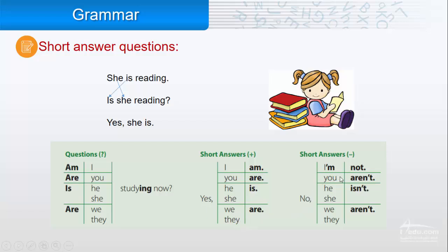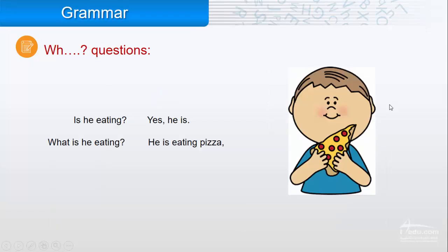If I want to make a wh- question: 'Is he eating?' Yes, he is - this is a short answer question. If I want to make a wh- question, we add the question word: 'What is he eating?' He is eating pizza. I have the same word sequence.